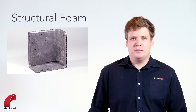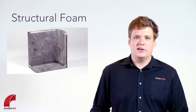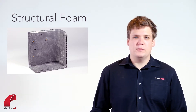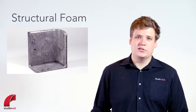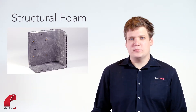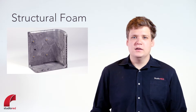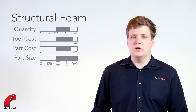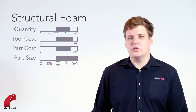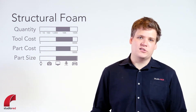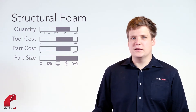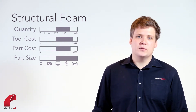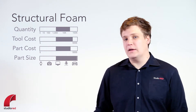If you have parts that are too big for typical hard injection — with walls over a quarter inch — but quantities that are higher than RIM would allow, a good alternative is structural foam. Structural foam is a thermoplastic process, just like injection molding, but a gassing agent is introduced which fills the mold, leading to lower pressures within the tool, which drives down tool cost relative to hard injection. However, because this gassing agent is introduced, there are always swirls in the surface, which lead to more finishing because you have to paint the product.